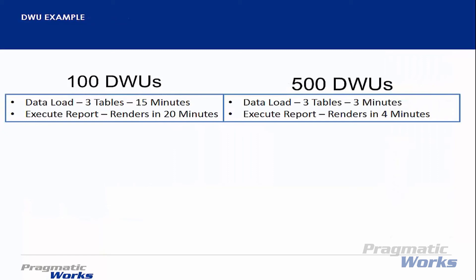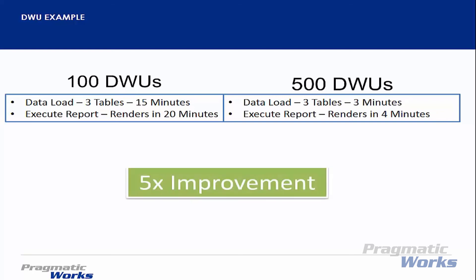Let's say I provisioned a data warehouse with 100 DWUs. I did a test and loaded 3 tables in 15 minutes, then ran a report that rendered back in 20 minutes. I then adjusted and increased my compute power to 500 DWUs. When I ran my test again, I loaded 3 tables in 3 minutes and ran my report in 4 minutes. Therefore, my improvement was 5 times. Basically, the data warehouse unit is a comparison unit. If I do a workload at 100 DWUs and then increase to 500 DWUs, I should expect an approximate 5 times improvement in my workload. By changing your service level, you alter the number of DWUs allocated to the system, which in turn affects the performance and the cost of your system.